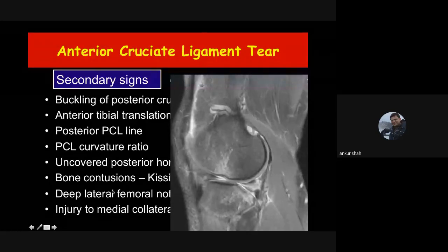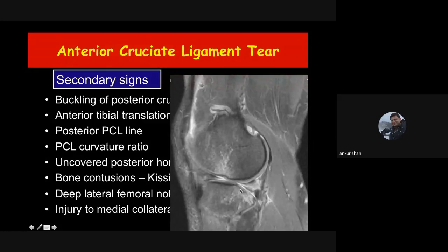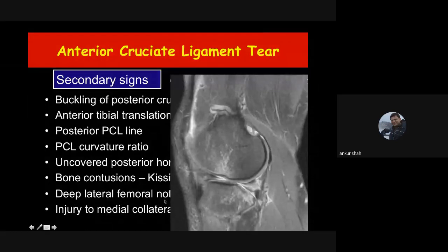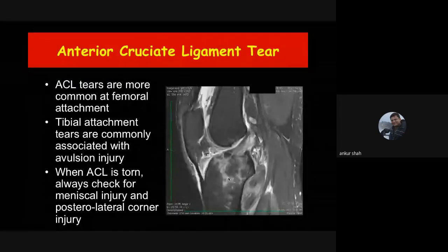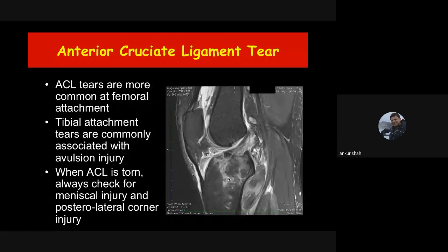Bone contusions are also important secondary signs: contusions at the anterolateral aspect of the lateral femoral condyle and posterior aspect of the lateral tibial condyle occur in pivot shift injury, highly suggesting ACL injury. The deep lateral femoral notch sign — when the normal femoral notch is more deep or there is a fracture step — is another secondary sign of ACL tear.